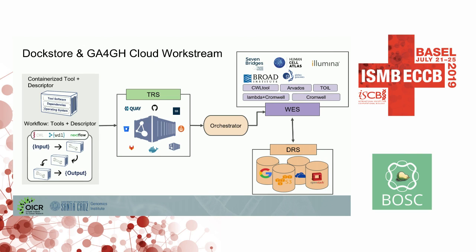This is the Dockstore ecosystem within the GA4GH Cloud Workstream. Containers are used to wrap up the software for tools, and those tools are then put into workflows wrapped around a descriptor, which are loaded into Dockstore as the TRS API provider. Through the TRS/WES orchestrator, Dockstore can communicate with WES and DRS endpoints. These are some of the different implementations of WES and DRS endpoints currently available and the different execution engines they run through.